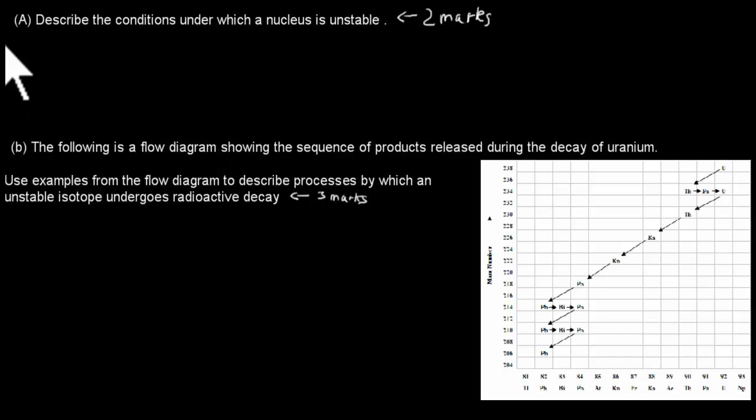Alright, so I'm back. So for the first one, describe the conditions under which a nucleus is unstable. You need to think about the different types of conditions. For example, that we might have large atoms or small atoms.